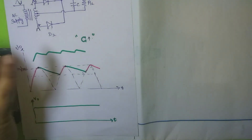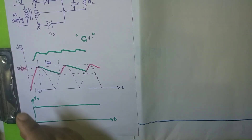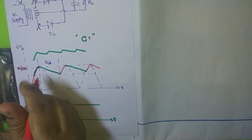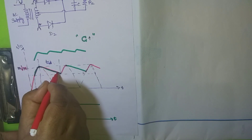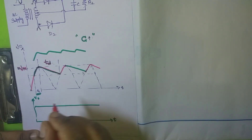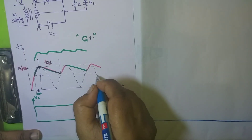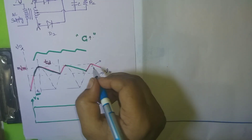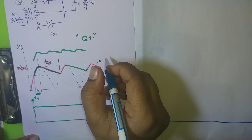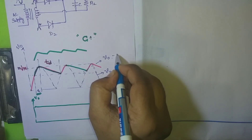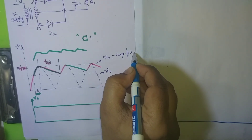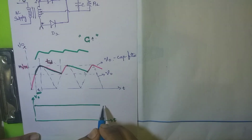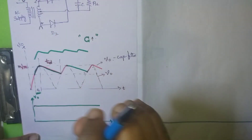The important parameters to note are: the charging time is TC, and the discharging time from the peak to when the next charging begins is TD. The output V0 without a capacitor shows the pulsating waveform, while V0 with the capacitor filter shows a smoother waveform. With sufficient capacitance, you obtain a constant DC output.